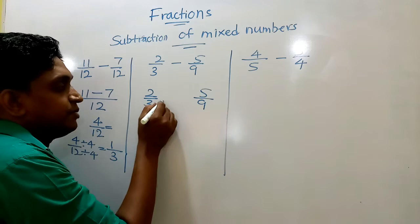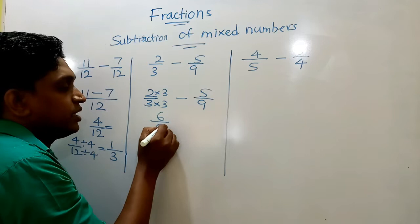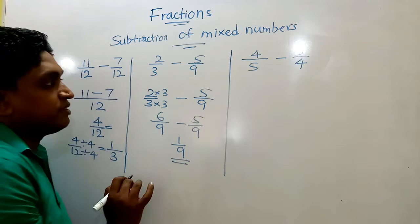So I want to change this 3 only. So to make that 9, children, I multiply 3 by 3 and I do the same with the numerator. Now you can see 6 over 9 and 5 over 9 means it is 1 over 9. So that is also very simple.